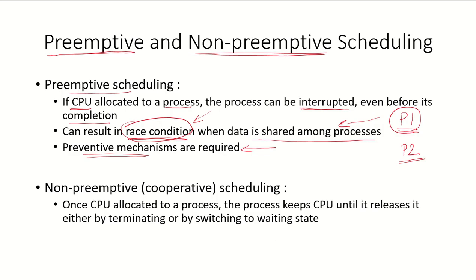The other kind of scheduling is non-preemptive or cooperative scheduling. Here, once the CPU is allocated to a process, the process will keep the CPU until it releases it — either by terminating or by switching to a wait state. The process keeps using the CPU until it terminates or has to go for I/O or some other event and switches to the wait state. The system cannot take away the CPU from that process during this time.